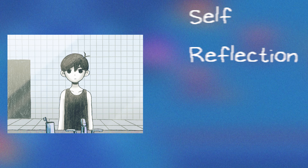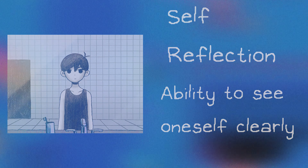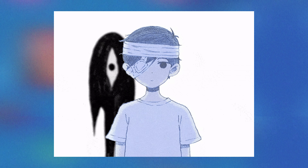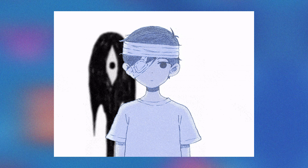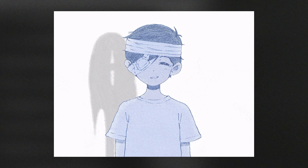Another visual motif used in Amori is the use of mirrors. Mirrors are a powerful symbol in the game, representing self-reflection and the ability to see oneself clearly. Throughout the game, the characters are shown looking into mirrors, often with distorted or fragmented reflections. This emphasizes the idea that our perceptions of ourselves can be distorted by our emotions and past experiences.